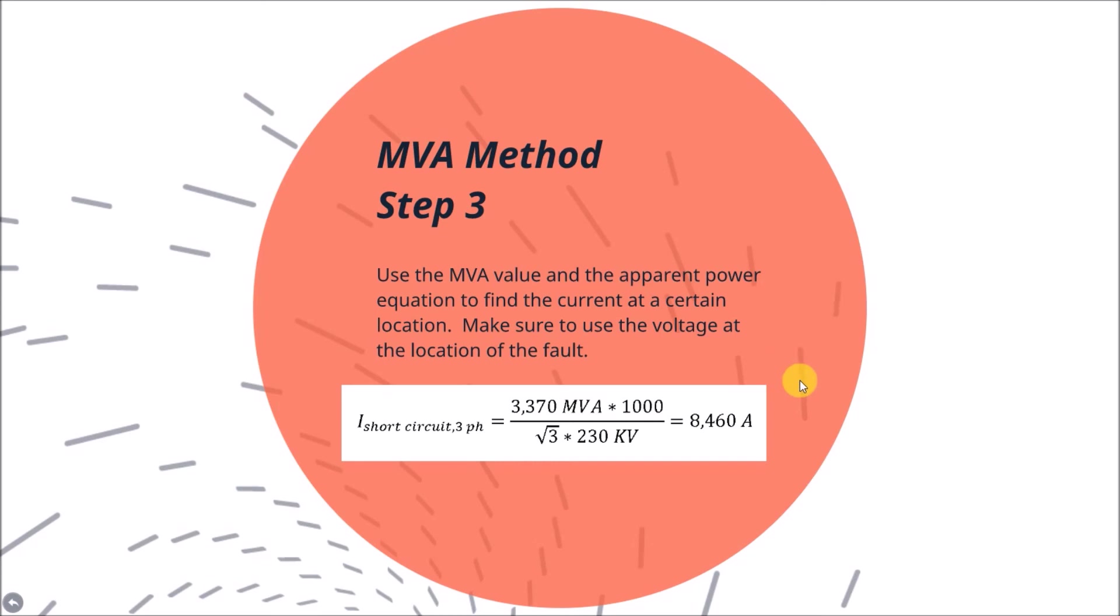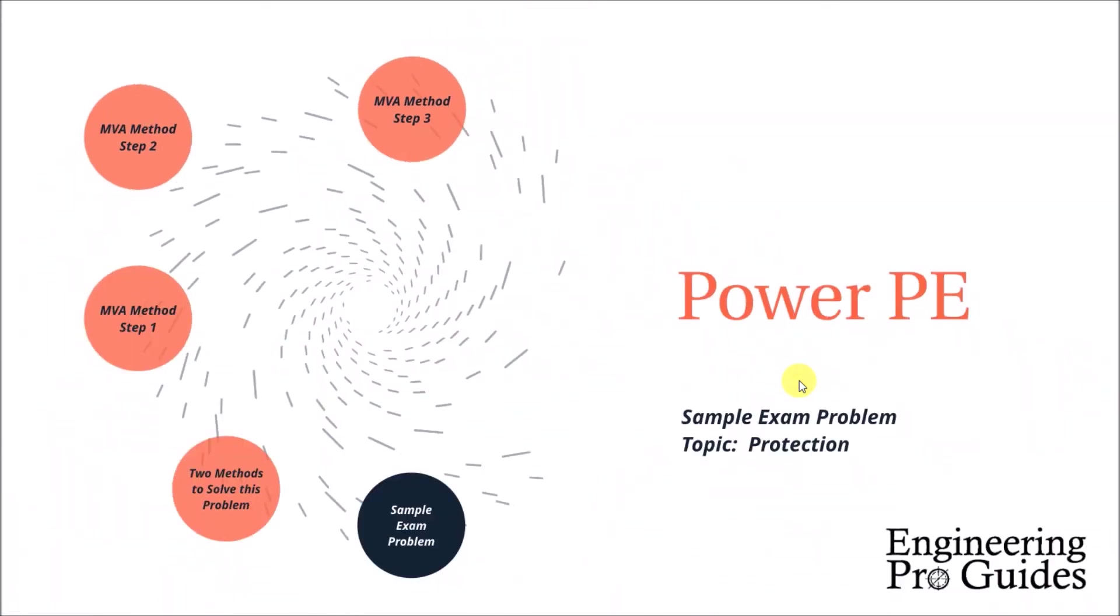The last step in the MVA method is to use the resulting combined MVA value for the entire circuit, from the power source to the fault location, and the apparent power equation to find the short-circuit current, or fault current, for a three-phase fault. The equation is simply apparent power is equal to the short-circuit current times the voltage.